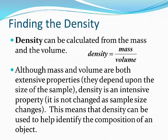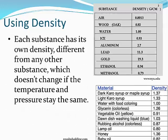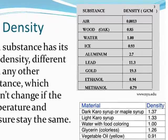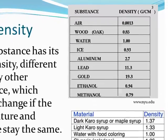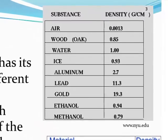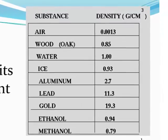Mass and volume depend on the size of the sample. Each substance has its own density, which is different from that of any other substance, and it is not going to change if the temperature and pressure stay the same. In these tables, we can see values of densities for various solid, liquid, and gaseous substances and mixtures.